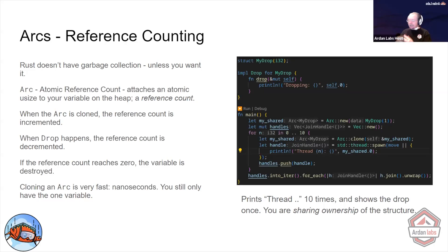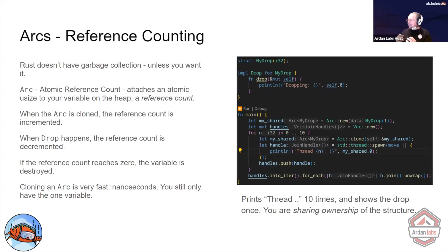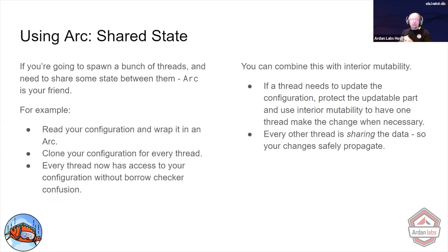It's reference counted — it's effectively garbage collected for you. As long as you eventually run out of clones, it will be destroyed. I'm not going to talk about circular references; those are a fun way to shoot yourself in the foot, but they're also mercifully rare. ARC is very much your friend. When would you use ARC? Just like in async — all the time.